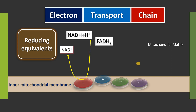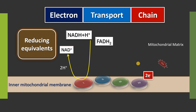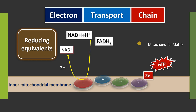NADH plus H+ will be converted to NAD+, and the two electrons are handed over to the various complexes. Finally there is an acceptor of these electrons — that is oxygen — and the energy is utilized for the formation of ATP. This formation of ATP is called oxidative phosphorylation because there are oxidation-reduction reactions taking place inside the inner mitochondrial membrane. I am going to make a separate video for oxidative phosphorylation.